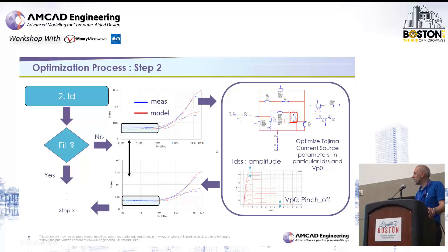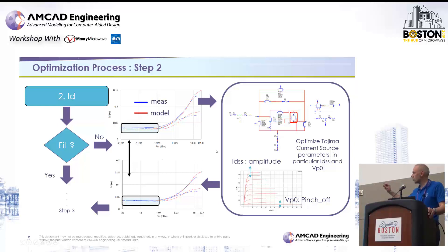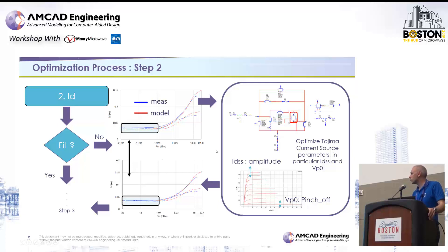Once we have done that, we also need to pay attention to the load pull simulation and load pull measurement comparison, especially looking at the very first point of the IV characteristic. If we observe the current consumption over the output power, we can see that sometimes there is a small shift between the model response and the load pull measurement. The very first step is to refine the current source description to align the first point of the current source over output power curve. We need to play on different parameters of the current source — it could be the pinch-off parameter, but also the IDSS parameters of the current source to align these measurements.